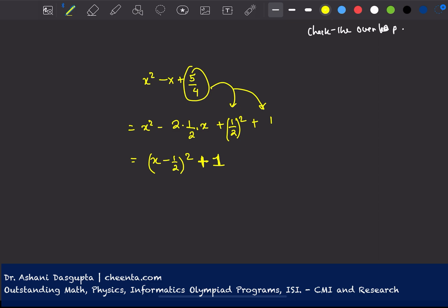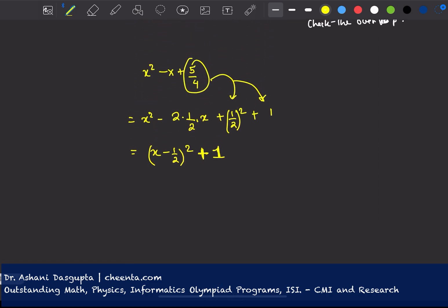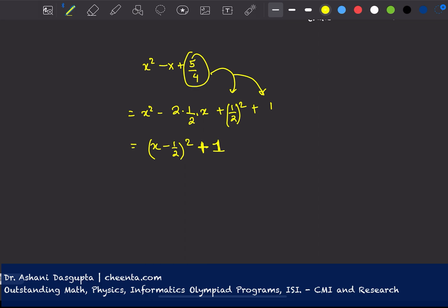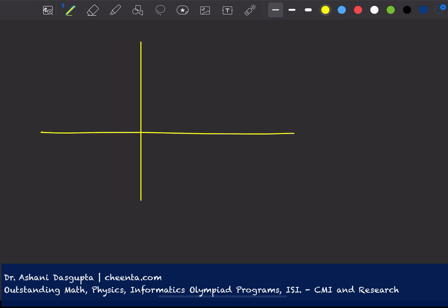So let's plot the graph of this function, x minus half square plus 1. So we know the graph of x square, y equal to x square. Let's assume that this is y equal to x square.